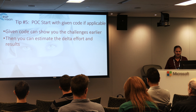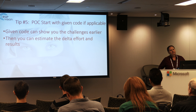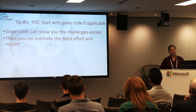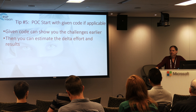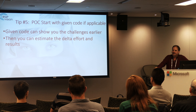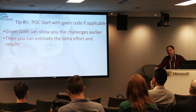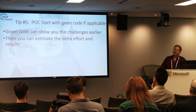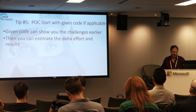Tip number five: proof of concept (POC). If during the POC you can use existing code — from the internet or a research lab — to make the first stages, it helps greatly to understand the more complicated cases. Then you can scope the work: maybe there is some algorithm that does 90% of the work, which isn't enough, but now you can see exactly what the remaining 10% is. It helps you scope the work that still needs to be done.